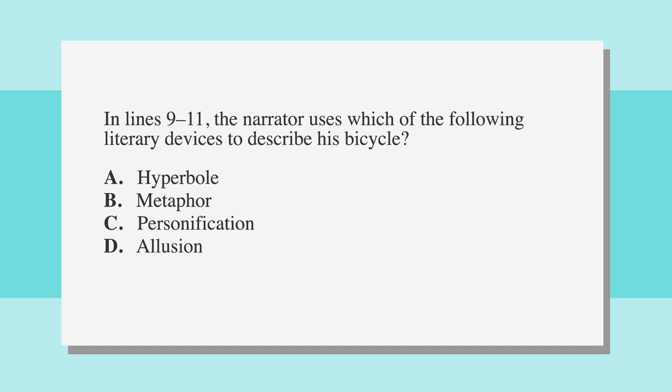Each of these answers discusses a literary device, so this is a good reminder that you should familiarize yourself with these for the test. Answer choice A is hyperbole, which is an exaggerated statement not meant to be taken literally. Twain isn't exactly using hyperbole in the lines we just read, so let's cross this one out.